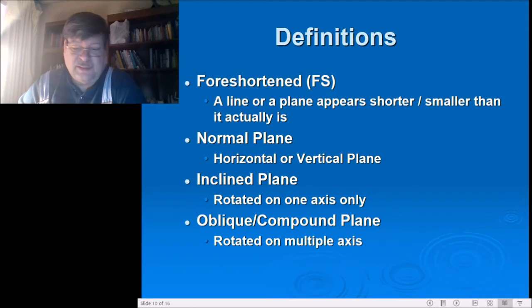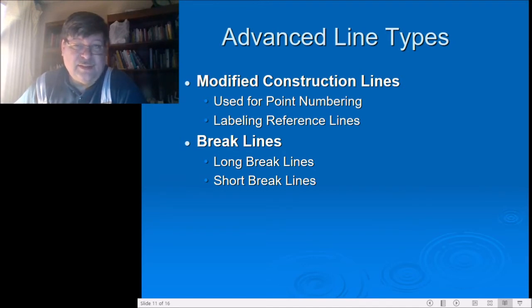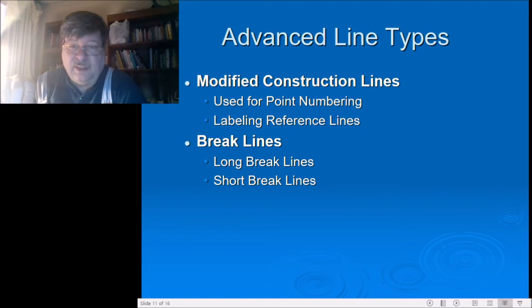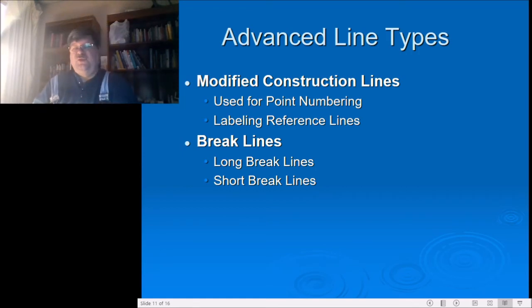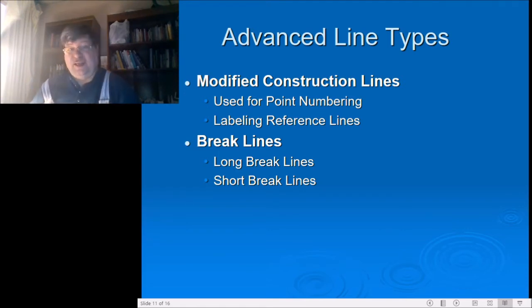Modified construction lines and break lines — a modified construction line is the line type used for numbering or lettering a plane. It's not really dark and not so light that it's hard to read. It's a projection line — dark enough that it doesn't disappear when you wipe your hand over the paper. We use it for point numbering or labeling things; it has to be legible and readable. Your object lines are what you want thick and dark so they stand out from everything else.